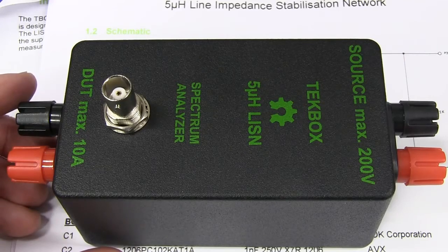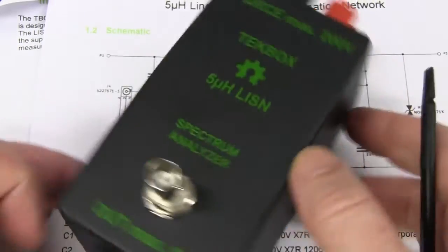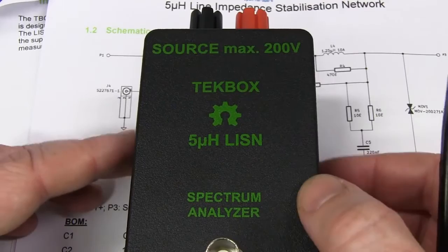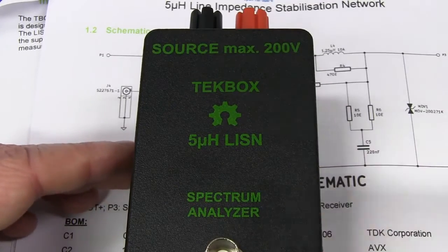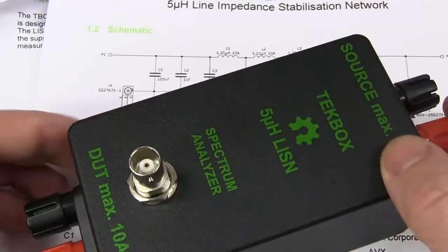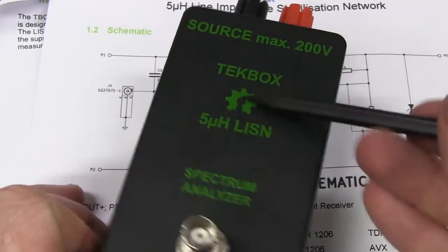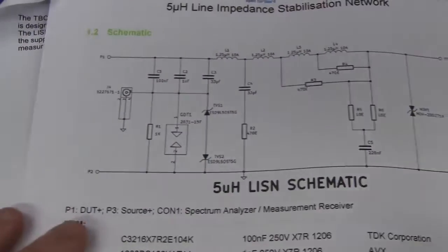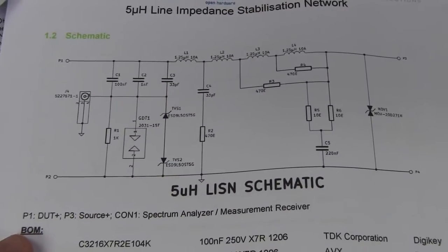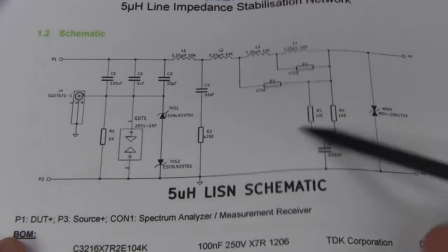So to do conductive pre-compliance testing, we need one of these listens or line impedance stabilization network. And I'll explain why it's called that in a second. This one is from Techbox and send it in. It is open source hardware. Brilliant. And here's the schematic. I'll provide the link down below and you can buy it from them, or you can make your own.